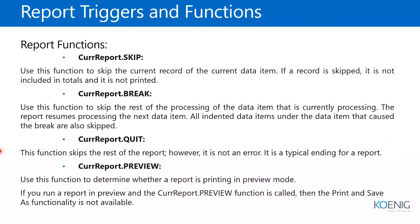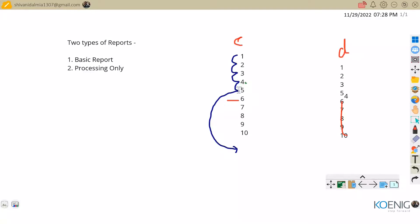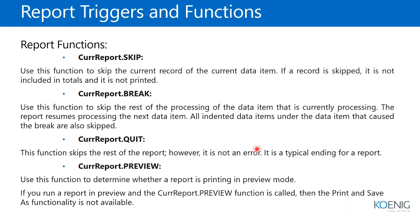CurrentReport.Quit: when this is encountered, it quits the execution of that report entirely. Whether we have customer, vendor, and item tables to process — nothing will be executed after CurrentReport.Quit. It's not an error; it's a typical ending of a report. CurrentReport.Preview is used to determine whether the report will be previewed or printed. These are some of the key report functions.